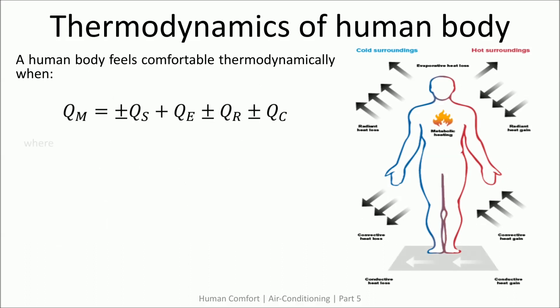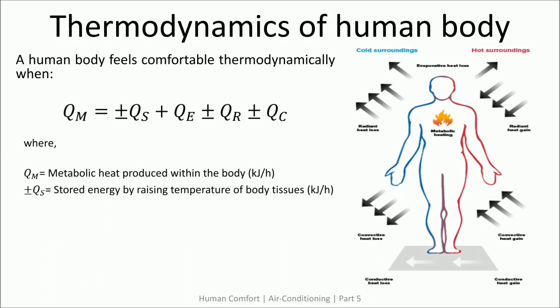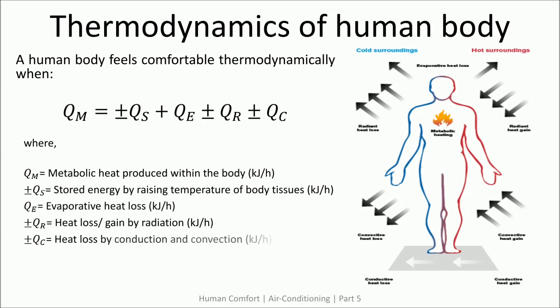Thermodynamically speaking, human comfort is achieved when the heat produced by the metabolism of the human body is equal to the sum of the heat dissipated to the surroundings and the heat stored in the body by raising the temperature of body tissues. This equation here represents the same mathematically.